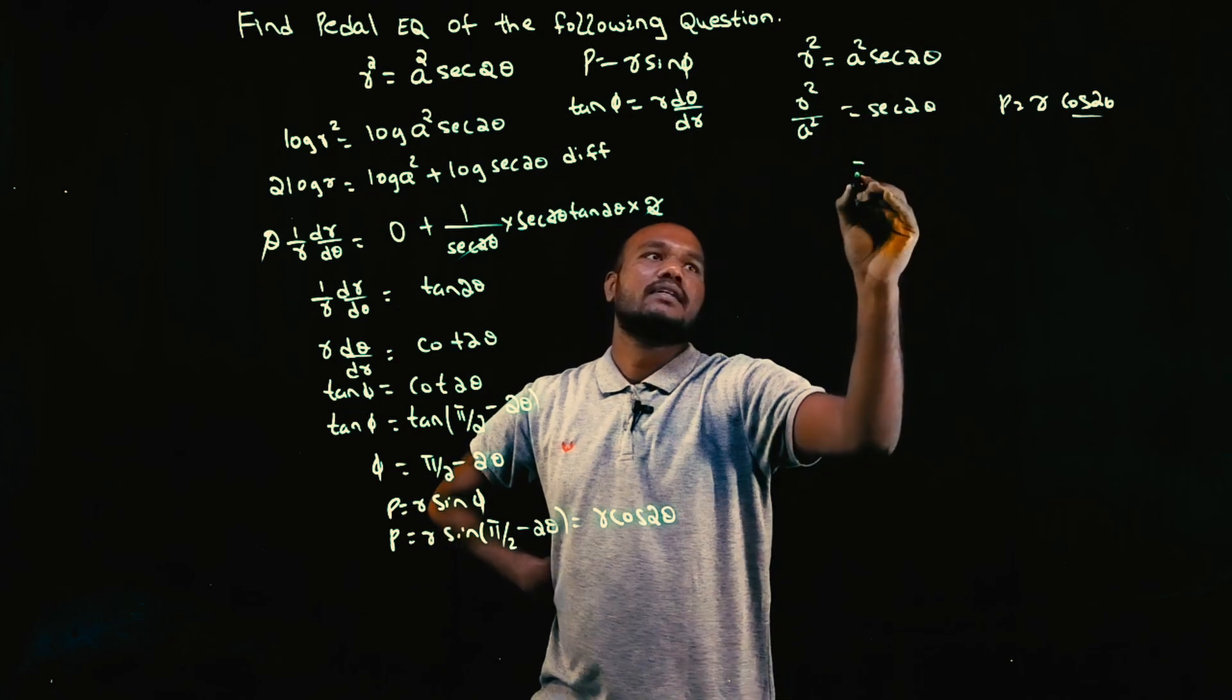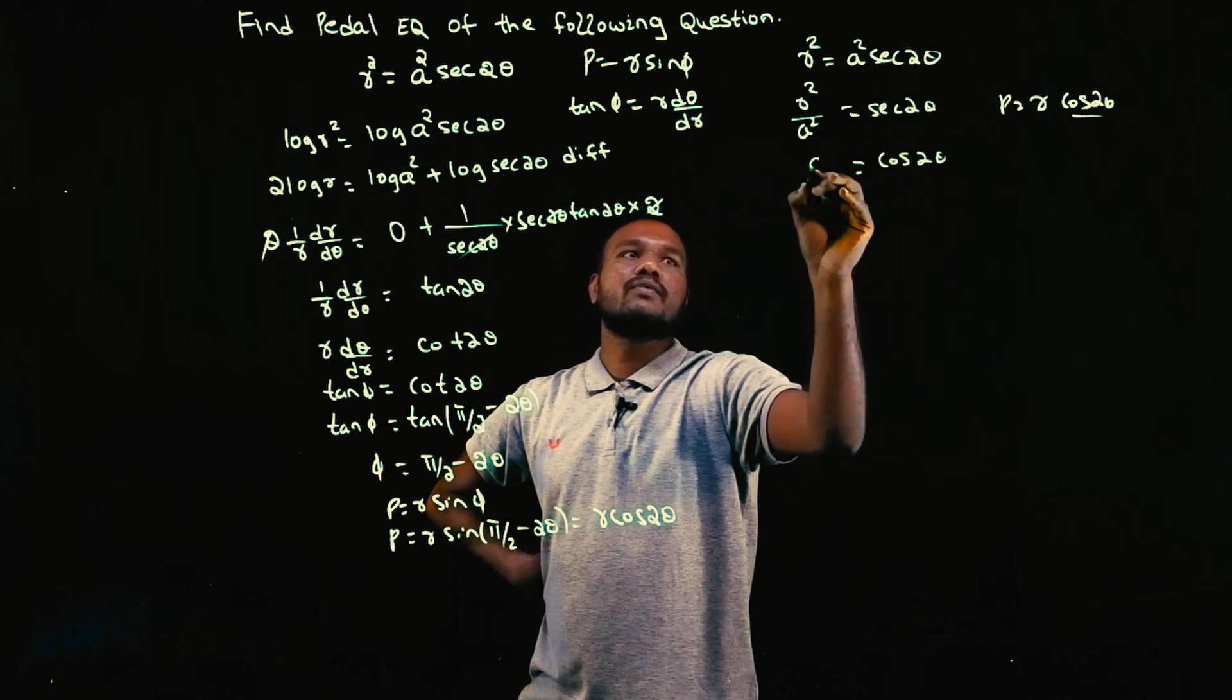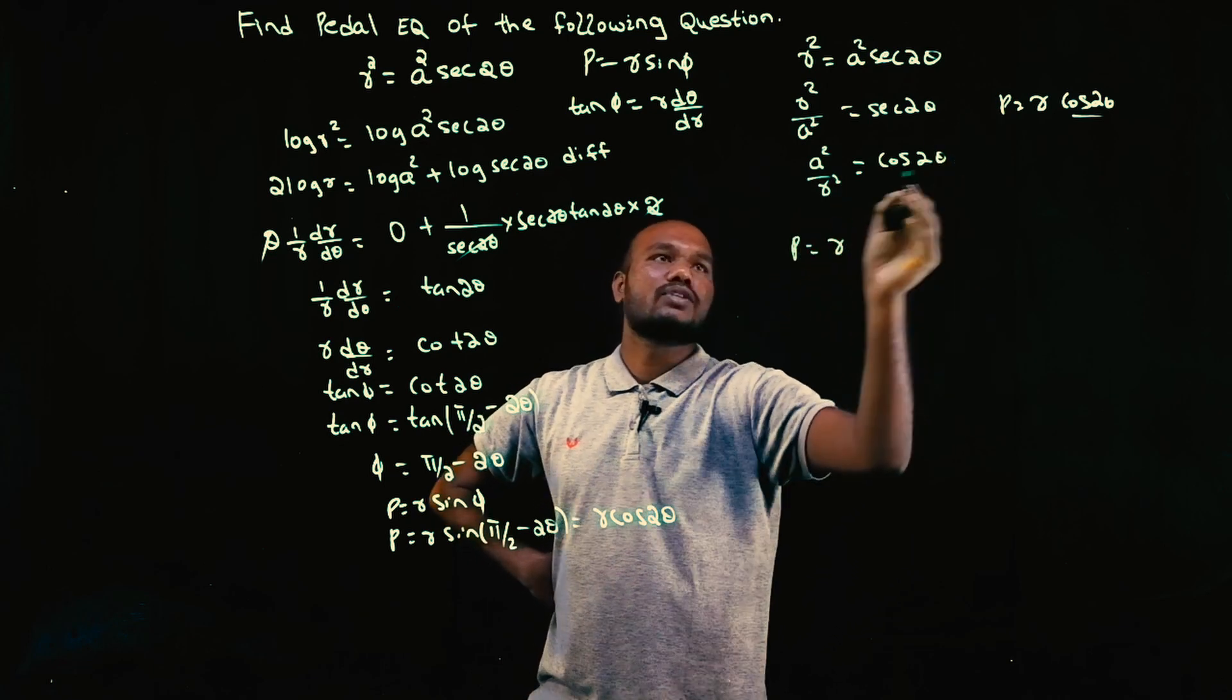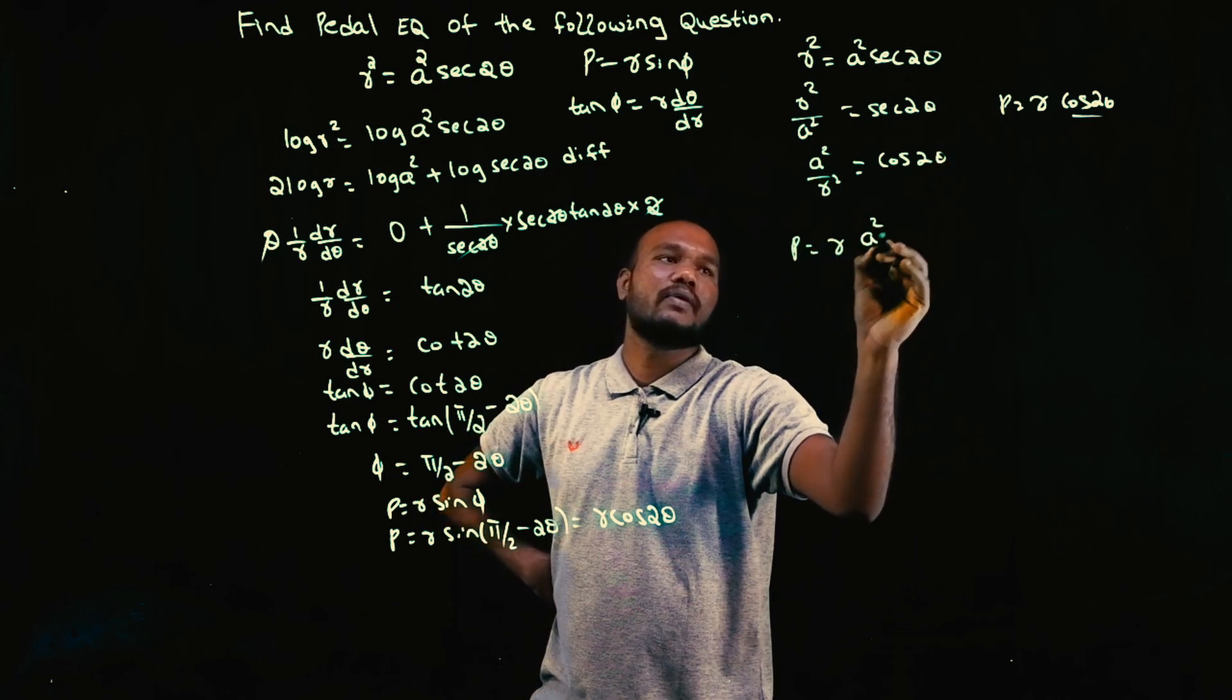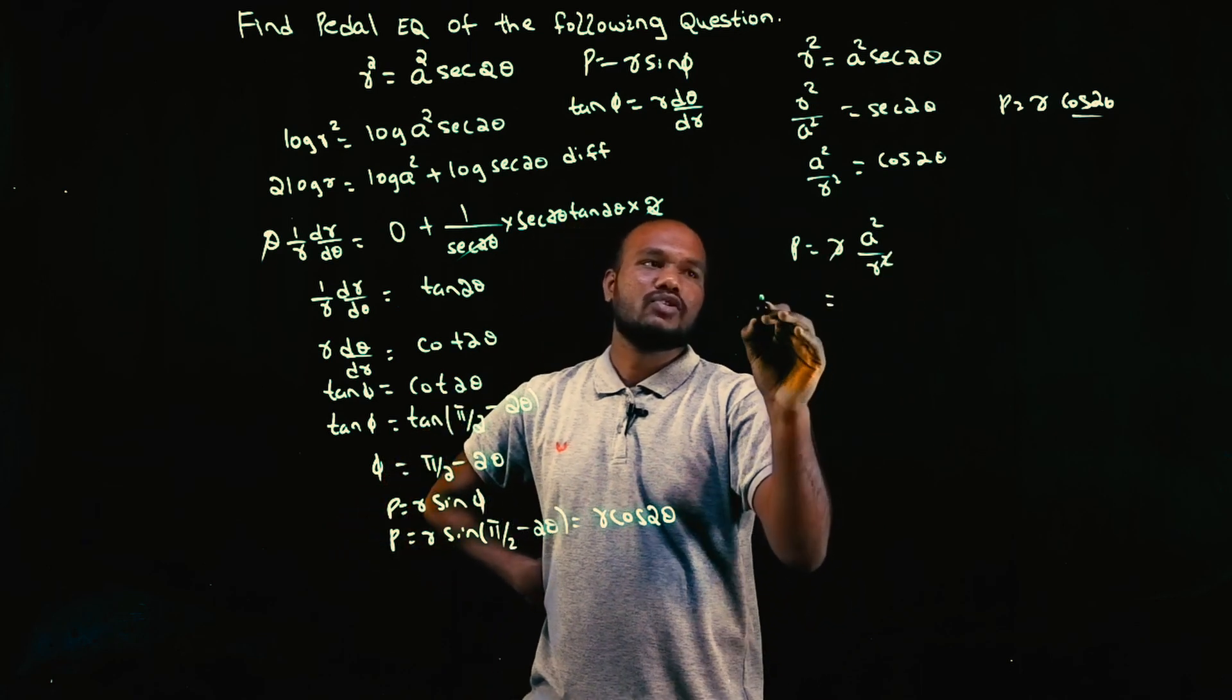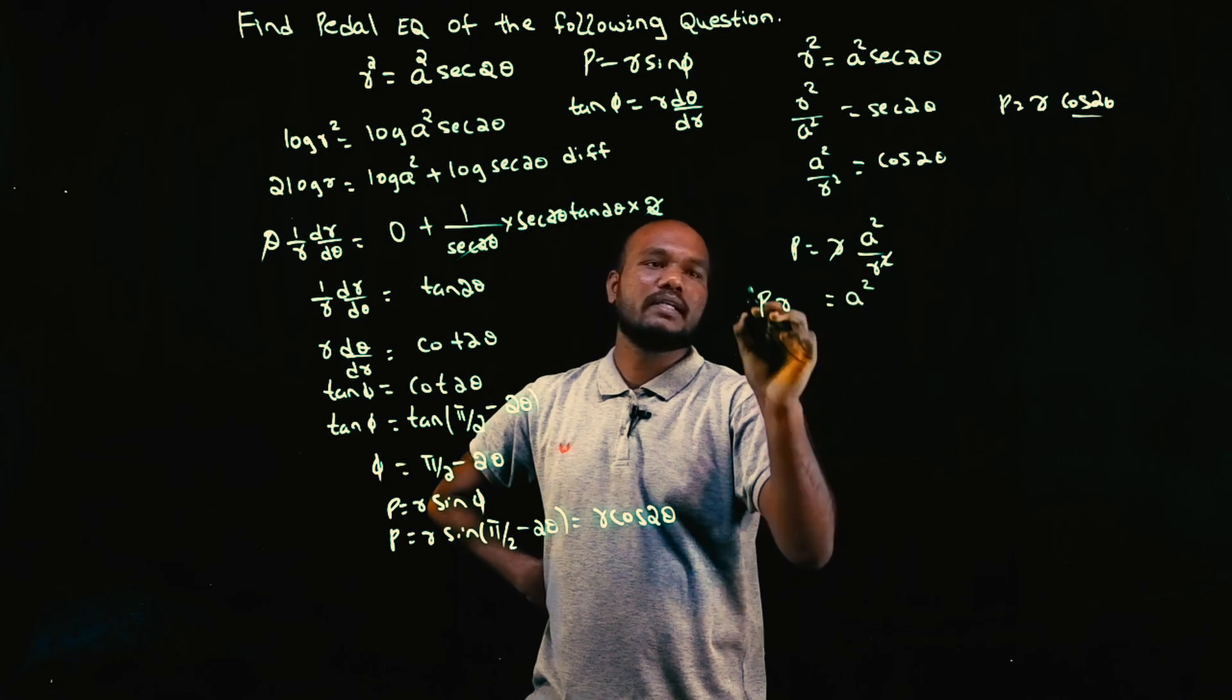Substituting, p = r × a²/r². We can cancel one r, so pr = a². This is the pedal equation for the given question.